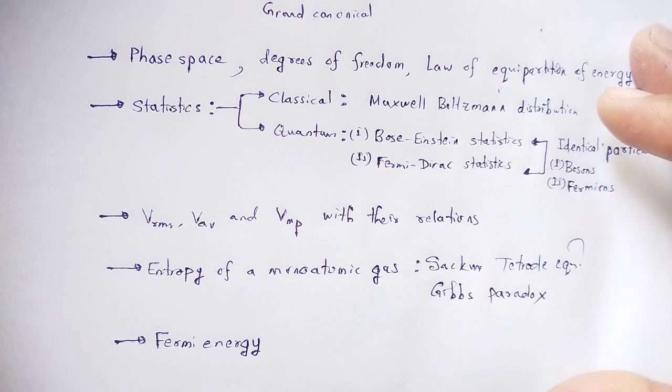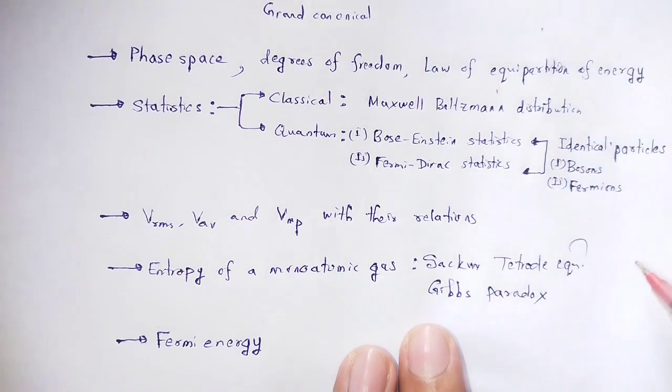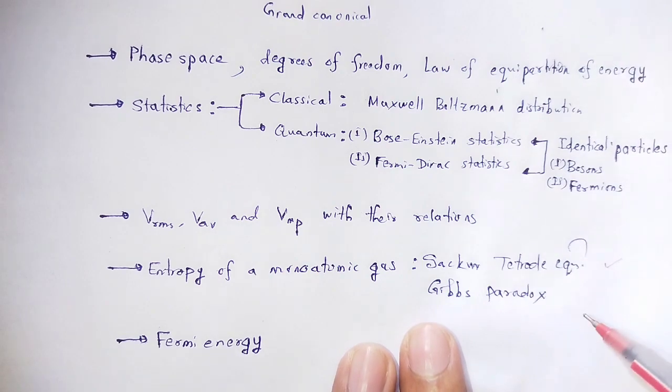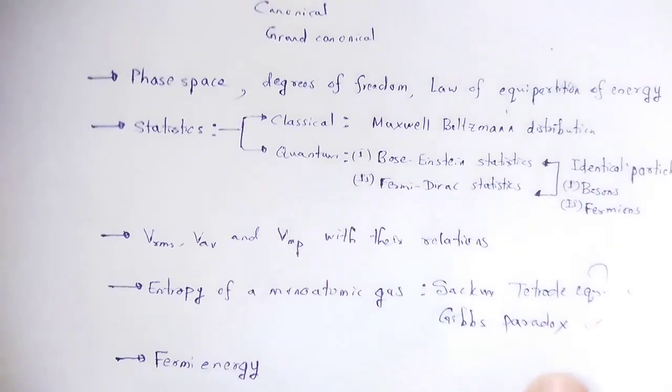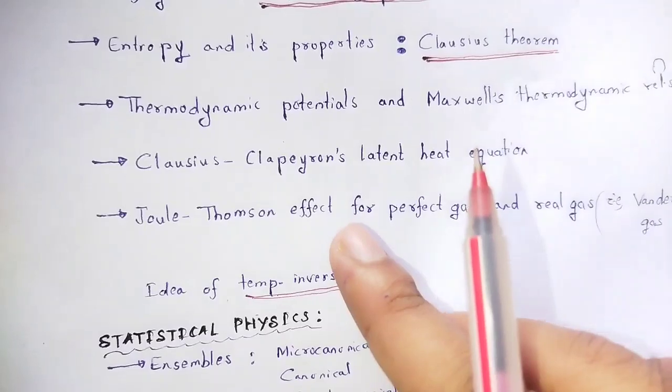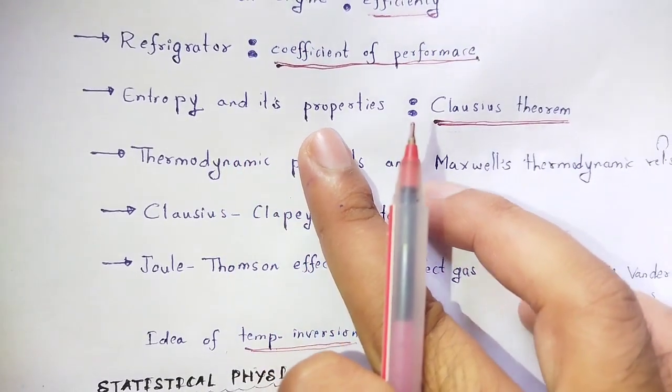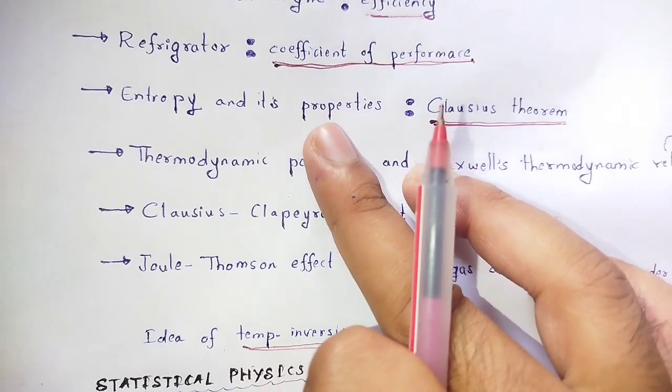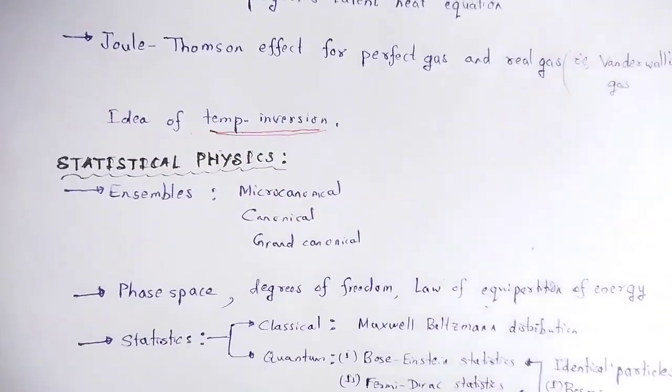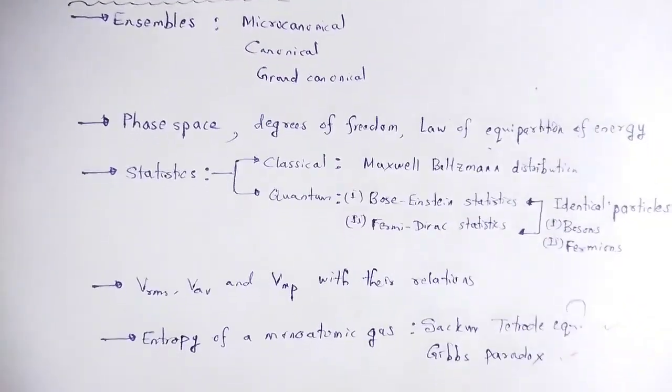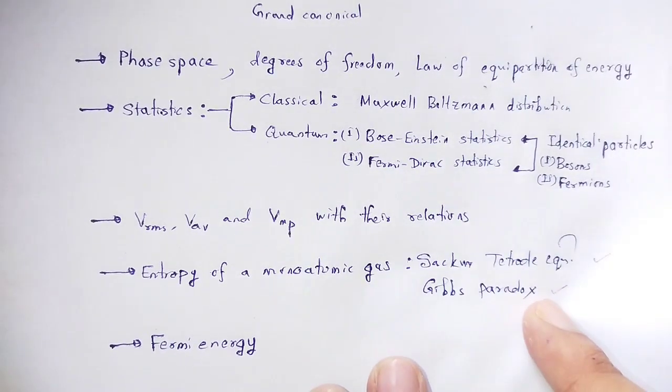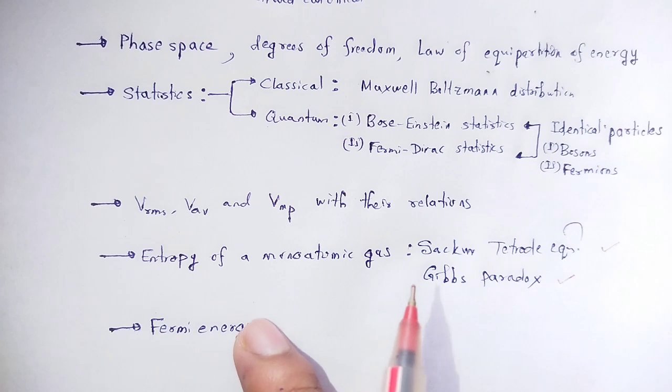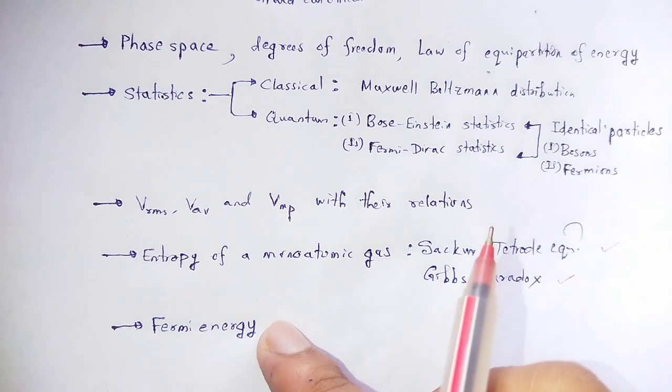Next topic: entropy of monatomic gas - the mathematical expression and equation. Gibbs paradox: the additive nature of entropy can be used to understand what is Gibbs paradox.